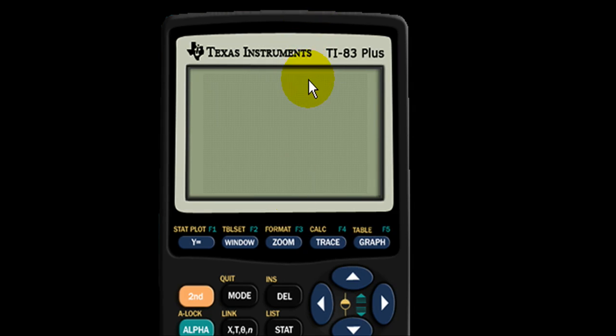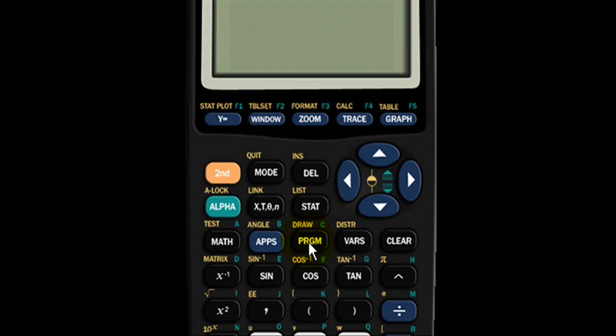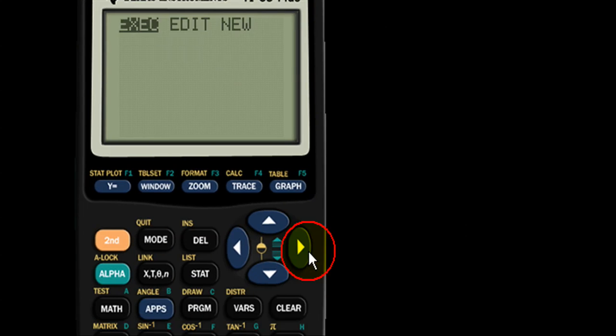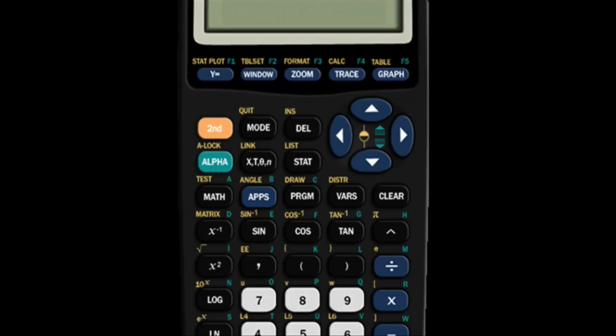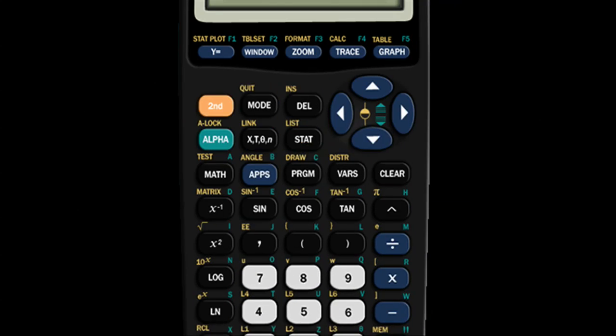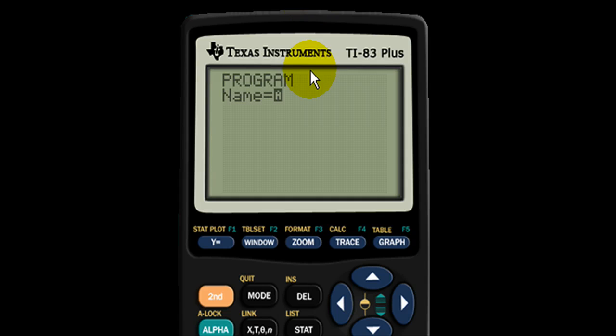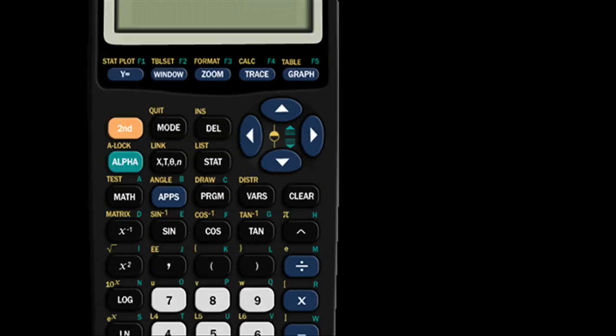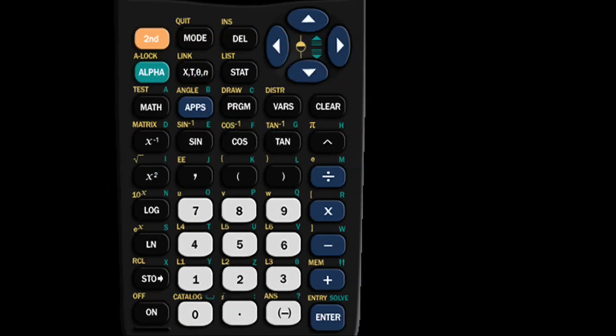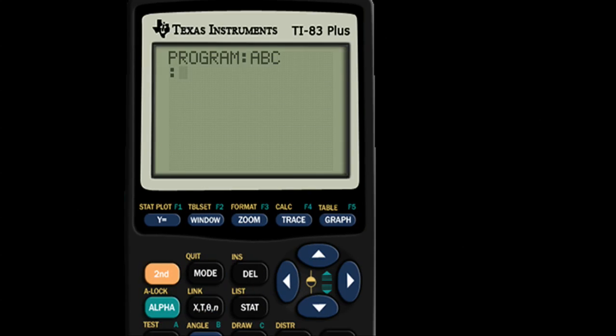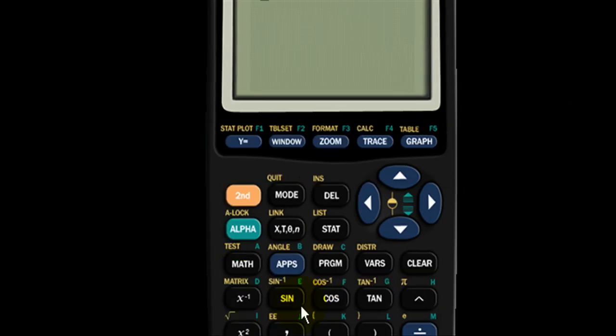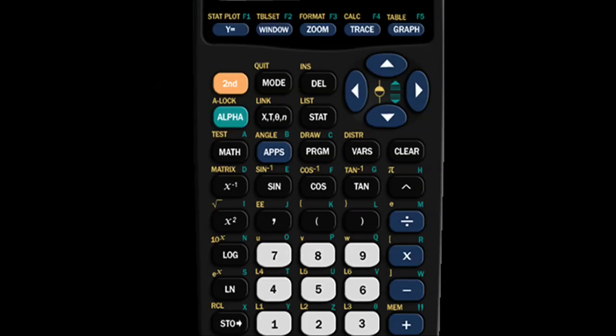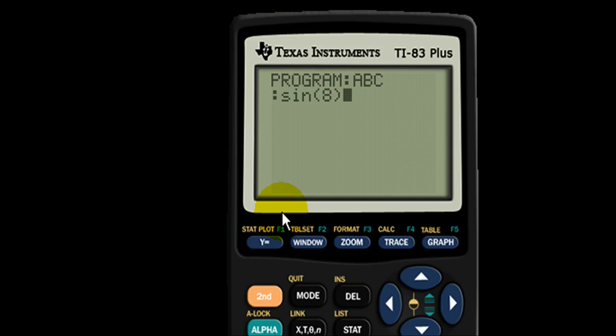Well I'm going to show you a method of still having that information stored in your calculator even after you delete the RAM. Now watch carefully. I'm going to create a new program just like I did before. Same steps creating a new program. For the sake of this video I'm going to name it ABC and it's going to ask me what I want to write. I'm going to write sine of eight once more and then I'm going to do second quit.